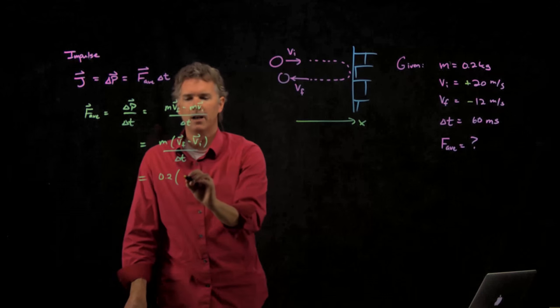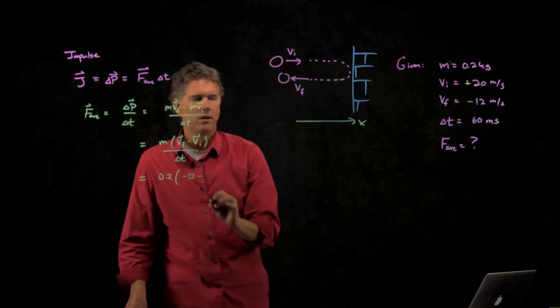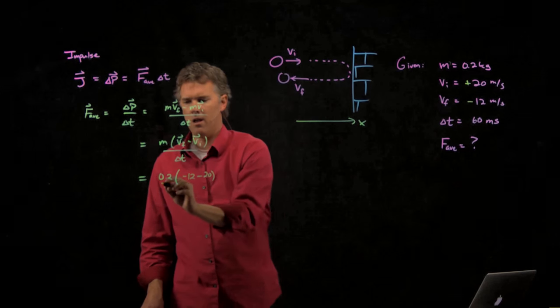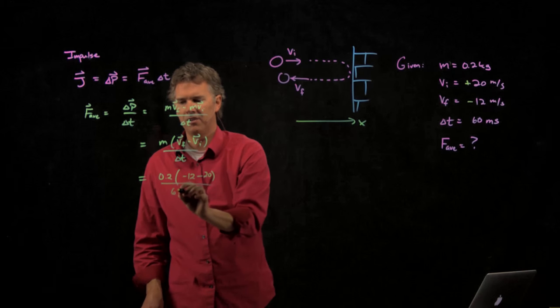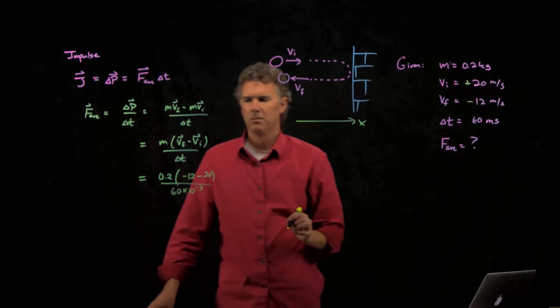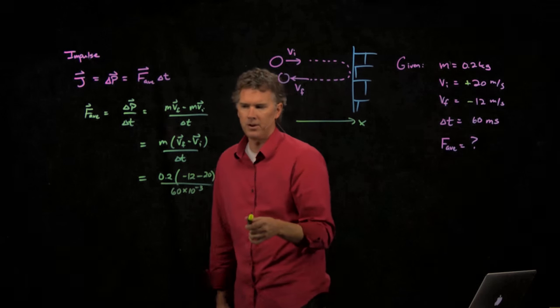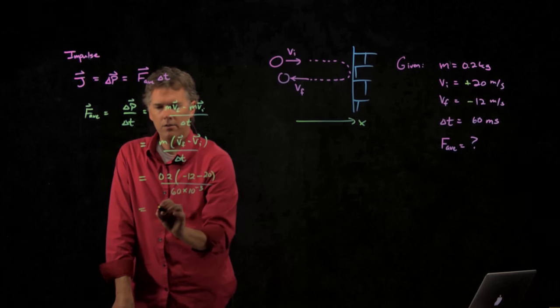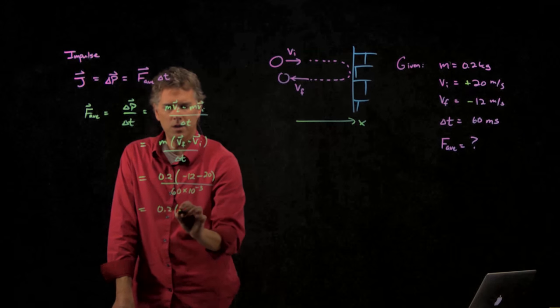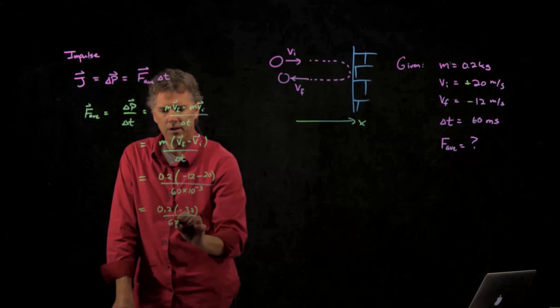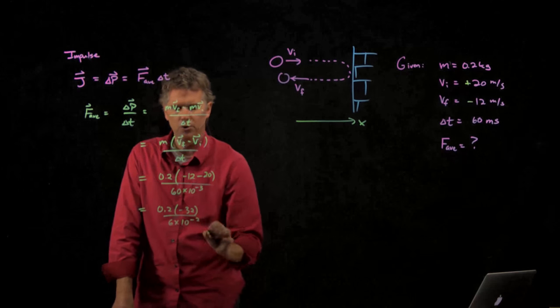All right, so now we have negative 12 minus VI, which we said was 20, and we're going to divide by 60 milliseconds. Milli is 10 to the minus 3, so somebody punch this into your calculator. I will see if I can approximate it here. So this is 0.2 times negative 32 divided by 6 times 10 to the minus 2.